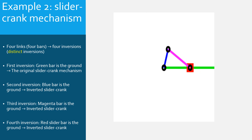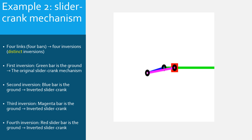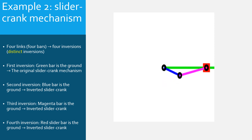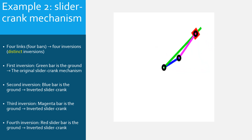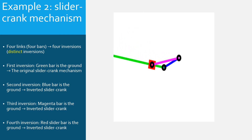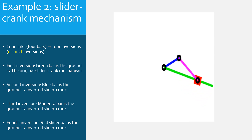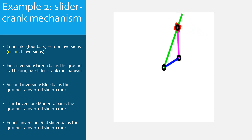This is a motion visualization of the slider-crank mechanism. The blue bar can complete 360-degree rotation. The slider is translating along the green bar, which is the grounded link. This is a motion visualization of the popular inverted slider-crank mechanism. The blue bar, opposite to the slider, is the ground. Both magenta and green bars can complete 360-degree rotations. The slider is translating along the green bar and accomplishes a general motion.